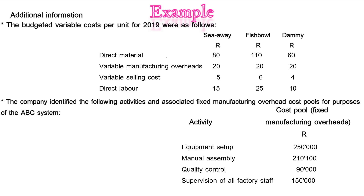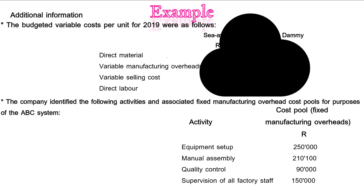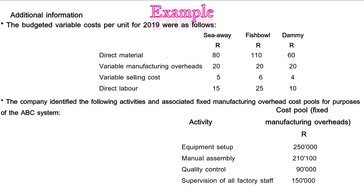Here is the additional information. The budgeted variable costs per unit for 2019 were as follows for the three products: COA, Fishbowl and Dami — covering direct material, variable manufacturing overheads, variable selling cost and direct labor. You won't be using this information specifically for the ABC costing question, but it's included because a lot of the time it may be misleading or you may add it unintentionally.